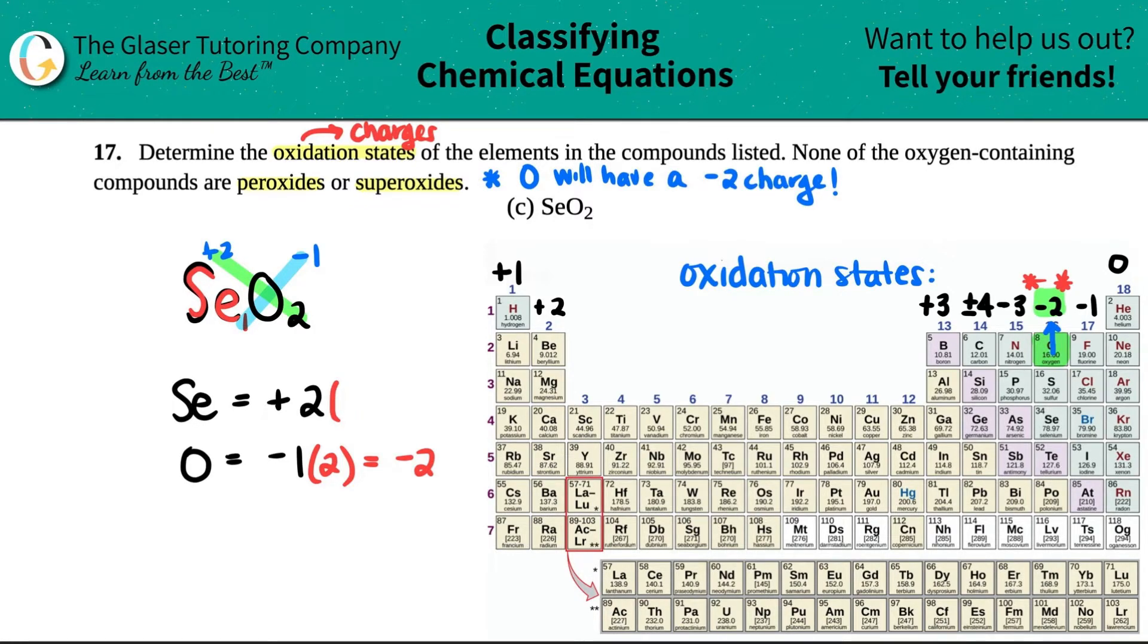I kind of gave you the answer by two as well. Right. And then plus two times two is a plus four. And those are your oxidation states. If you just left it as a plus two and a minus one, your professor or teacher will mark you wrong.